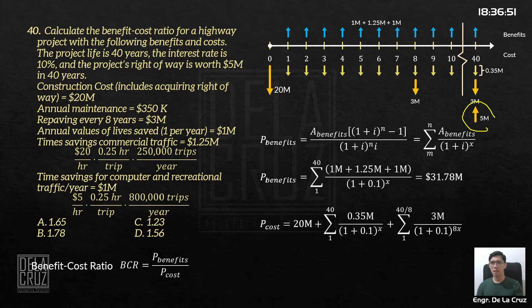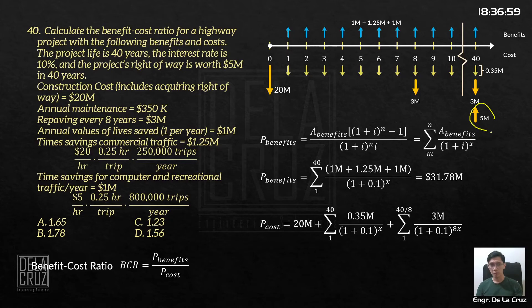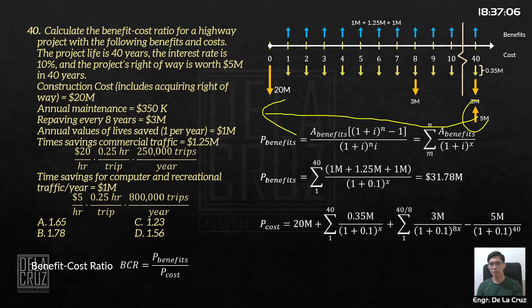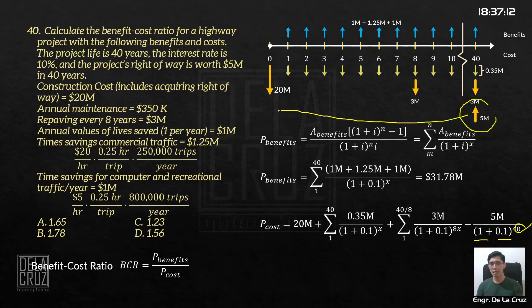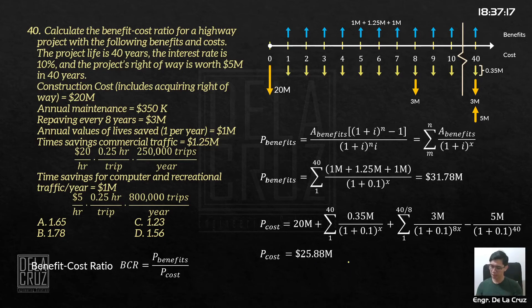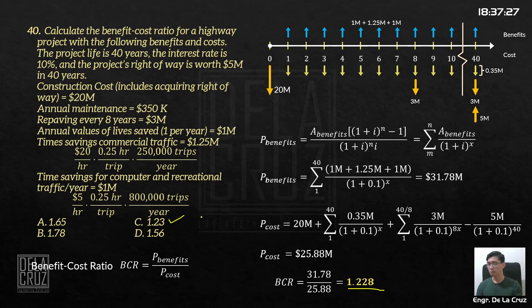The 5 million right-of-way at year 40 is deducted from the cost. Being a lump sum, we discount it to present time: minus 5 million over (1 + i)^40. Evaluating all the costs together, the present worth of costs is 25.88 million. Using the benefit-cost ratio formula, that gives 1.228 or approximately 1.23.